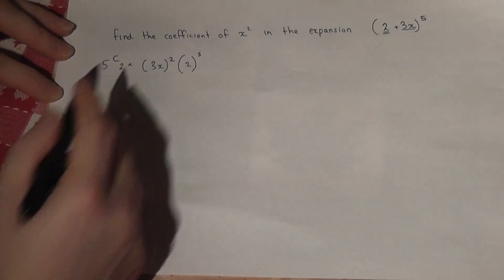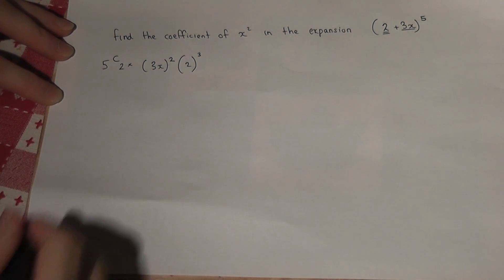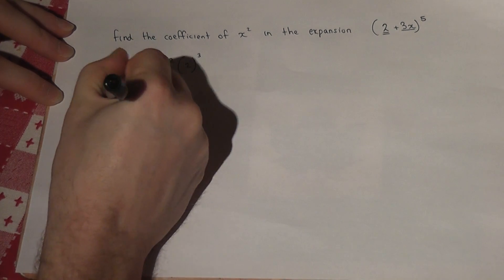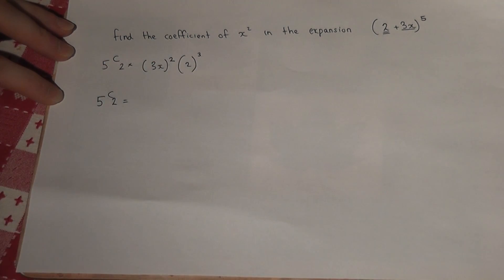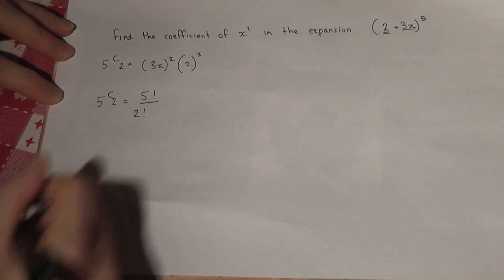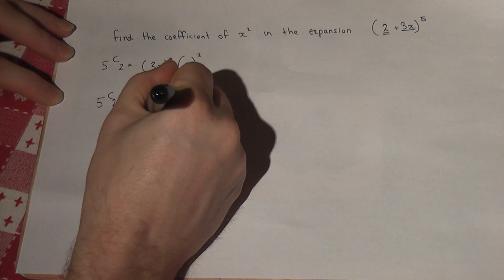Now then, this can be worked out using factorials. 5c2 equals, and the formula is 5 factorial over 2 factorial over 3 factorial.